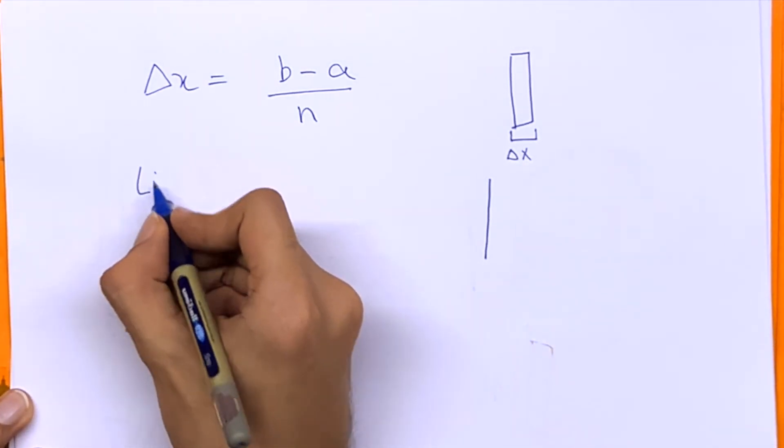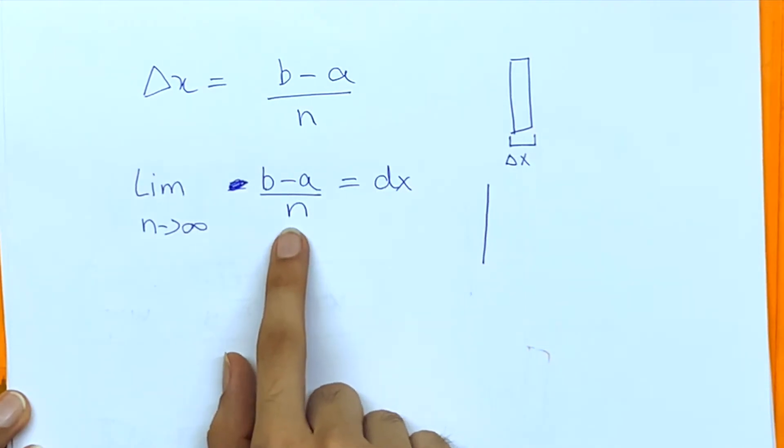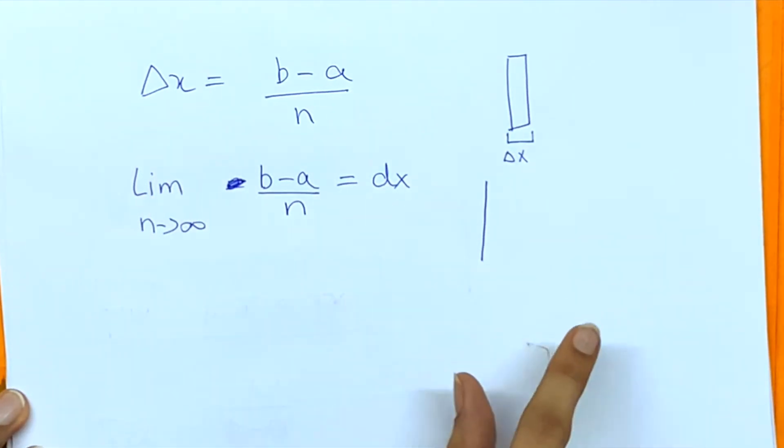So let's take the value of n closer to infinity. That would give us such a small value of delta x that we call it dx.